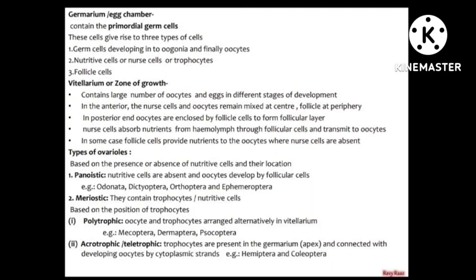Now the types of ovules, on the basis of presence and absence of nutritive cells and their location. First is panoistic — nutritive cells are absent and the oocyte is developed by follicular cells. In this type, nutritive cells are absent but follicular cells develop the oocytes. Examples include the orders Orthoptera and Dictyoptera.